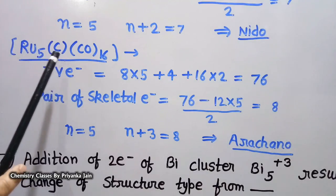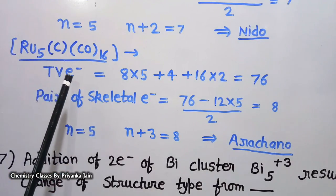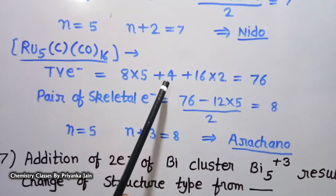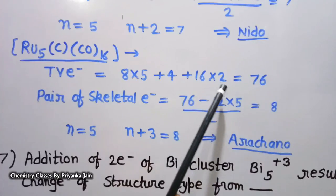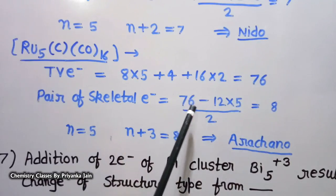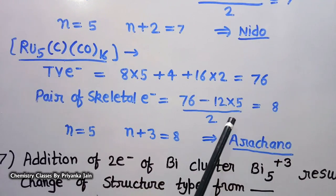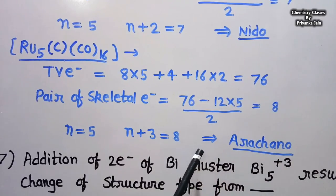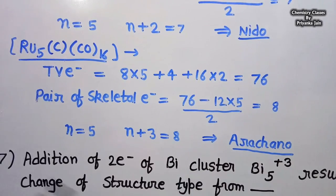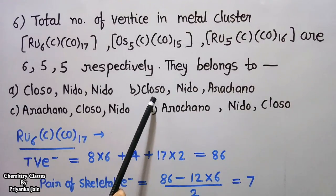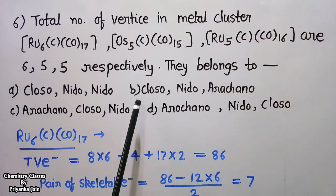For the third cluster RU5C(CO)16: 8×5 + 4 + 16×2 = 76 total valence electrons. SEP = (76 − 12×5) / 2 = 8 pairs. The number of vertices is 5, so 8 = n + 3, which belongs to the arachno group. Therefore the three clusters are closo, nido, and arachno respectively — option B is correct.